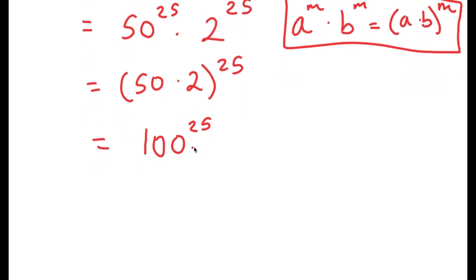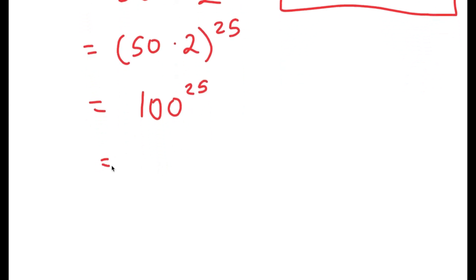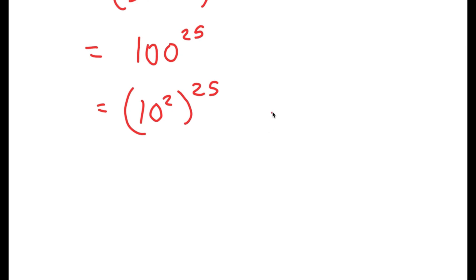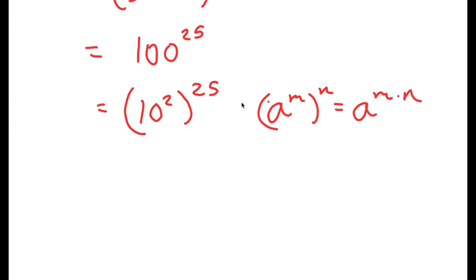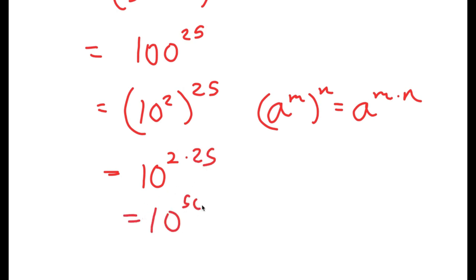However, I'm not done yet because I'm going to simplify this a little more. 100 can be rewritten as 10 squared, so I get (10^2)^25. And using the property that (a^m)^n equals a^(m times n), I get 10 to the power of 2 times 25, which equals 10 to the power of 50. So 10^50 is my answer to this problem.